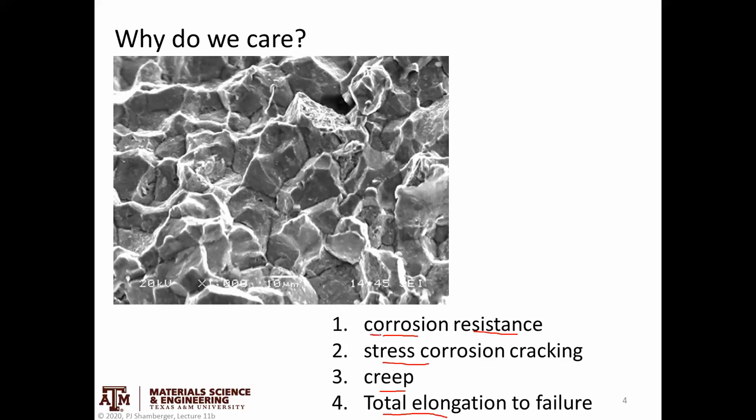For example, corrosion — this grain boundary could be identified as a point of weakness, and it could preferentially oxidize or corrode along that grain boundary, causing a crack to propagate into the material. We might not actually care about the corrosion resistance of a perfect single crystal; what actually causes our material to fail at the end of the day is how that grain boundary behaves.